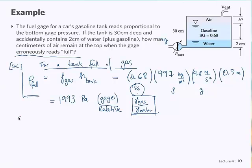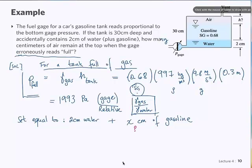So now, this is the pressure that we need to set equal to the situation that we see in the picture. Two centimeters of water. Plus some distance of gas that we don't know. X centimeters of gas. This is our unknown. But the gauge reads full, so it needs to be the same pressure. You agree? Everybody happy with that? Good. Okay, so we set it equal to 1993 pascals is equal to water, two centimeters. So I'm going to convert to meters right away, 0.02 meters.